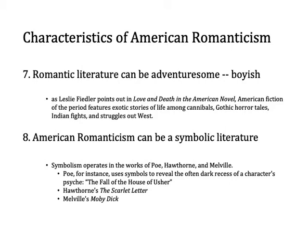Romantic literature, particularly American Romanticism, can be adventurous and at times boyish. As Leslie Fiedler points out in his study Love and Death in the American Novel, American fiction of the period features exotic stories of life among cannibals, gothic horror tales, Indian fights, and struggles out west. American Romanticism can also be a symbolic literature — we see symbolism operating in the works of Poe, Hawthorne, and Melville. Poe uses symbols to reveal the dark recesses of a character's psyche, as in The Fall of the House of Usher. Nathaniel Hawthorne's The Scarlet Letter is a symbolic novel — really the nation's first fully symbolic novel. Herman Melville's Moby Dick is symbolic literature as well.